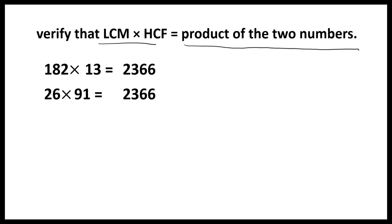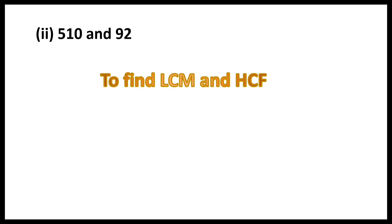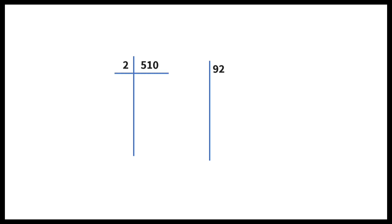It is verified. The second problem is 510 and 92 — find LCM and HCF by prime factorization method. Both 510 and 92 are even numbers. 510 is divisible by 2; 2 fifty-fives are 510. The result 55 is odd, but divisible by 3; 3 eighty-fives are 255. It is again divisible by 5; the next prime factor is 5, and 5 seventeens are 85.